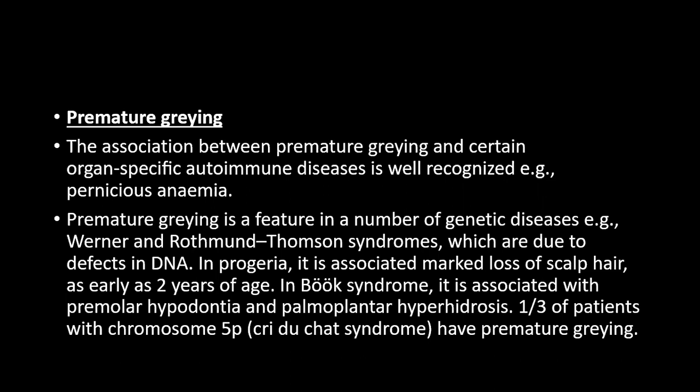Premature greying: the association between premature greying and certain organ-specific autoimmune diseases — such as pernicious anemia — is well recognized. Premature greying is also a feature of several genetic diseases: Werner and Rothman-Thomson syndrome, which are due to defects in DNA; progeria, associated with marked loss of scalp hair as early as two years of age; Brook syndrome, associated with premolar hypodontia and palmoplantar hyperhidrosis; and one third of patients with chromosome 5p deletion (Cri-du-Chat syndrome) have premature greying.